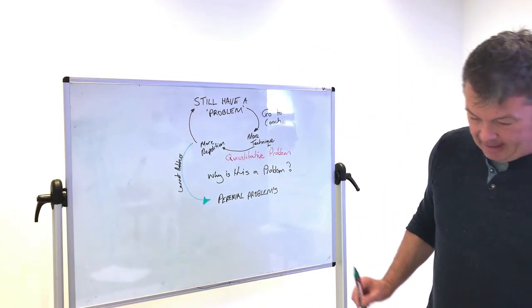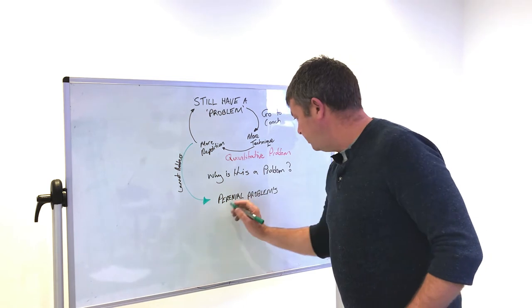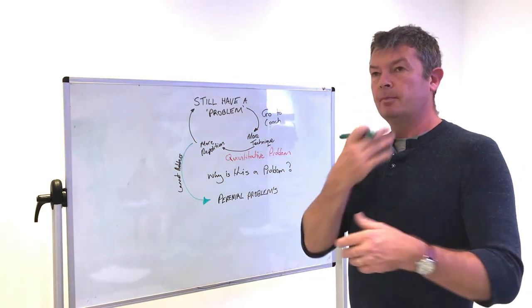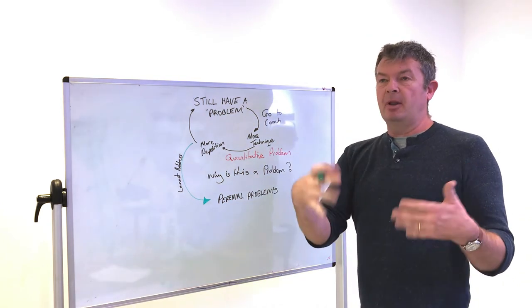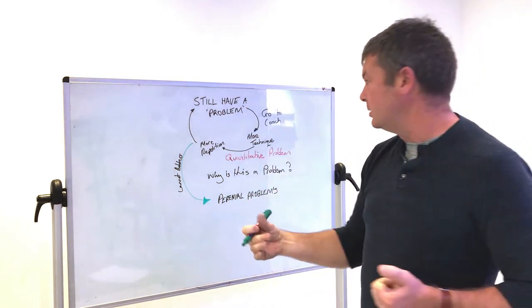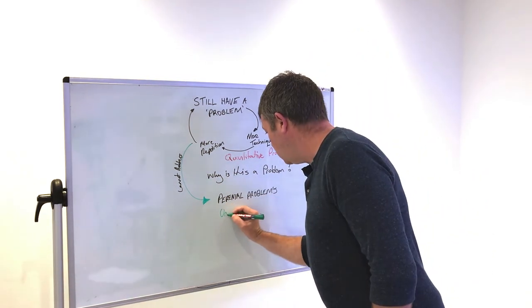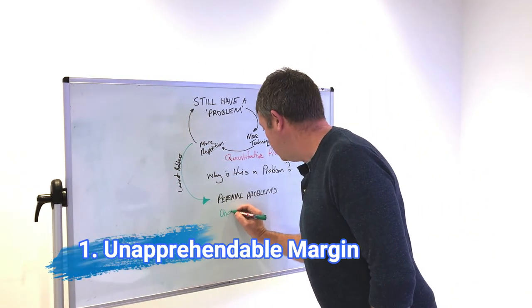So we have perennial problems. The two big perennial problems in tennis - a perennial actually it's pretty plus. And we have unapprehendable margin.